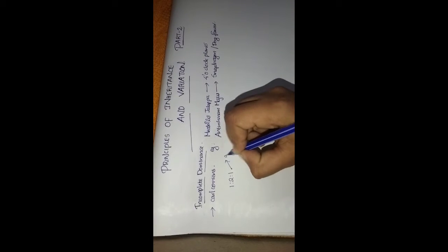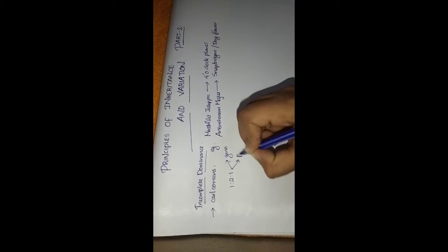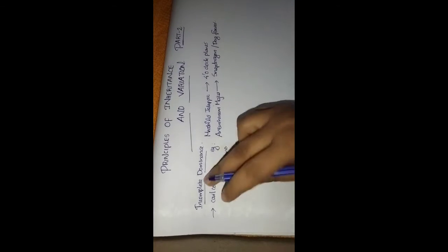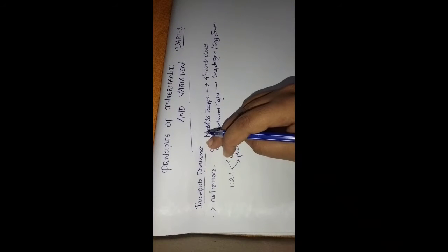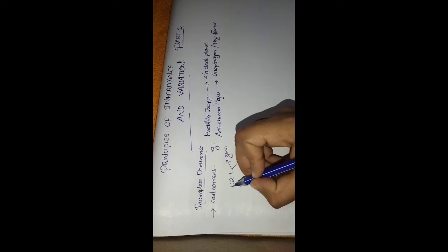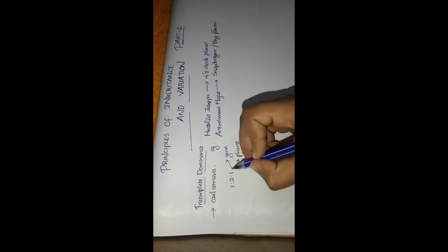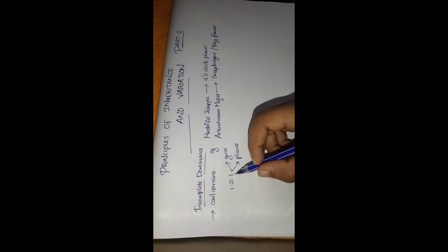In incomplete dominance, both the genotypic ratio and phenotypic ratio are the same — one is to two is to one. One homozygous, two heterozygous, and one homozygous — that is the ratio.